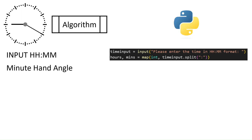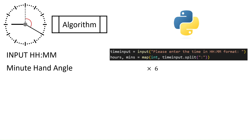Next, to calculate the minute hand angle at any time, we can't rely on a variable base like before, so let's fix our base at the vertical 00:00. This way, we never have to change it. If we divide our minutes by 60 to get the fraction of an hour that the minute hand has turned, and multiply by 360 degrees, we get 360 divided by 60 equals 6 — so the position of the minute hand is just the minutes multiplied by 6.